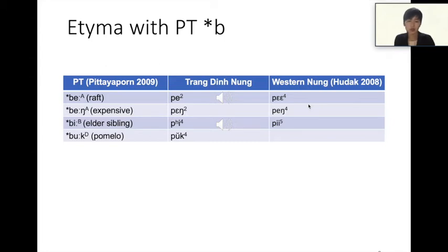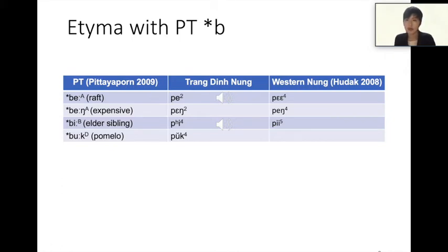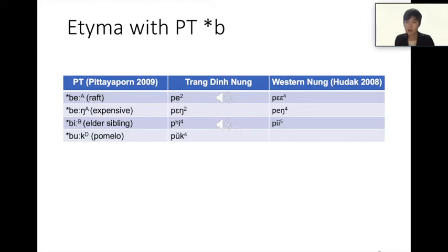Now let's move on to comparing etyma. This table shows etyma with prototype *b. The word 'left' has A-tone and in Chanding NUN is bae. The word 'elder sibling' has B-tone and in Chanding NUN is pi. As you can see, prototype *b without B-tone is realized as b, and *b with B-tone is realized as p in Chanding NUN.